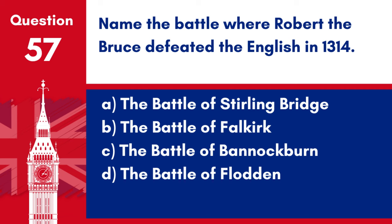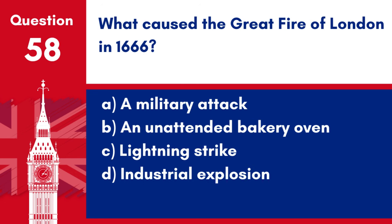Question 57. Name the battle where Robert the Bruce defeated the English in 1314. a. The Battle of Stirling Bridge. b. The Battle of Falkirk. c. The Battle of Bannockburn. d. The Battle of Flodden. Answer: c. The Battle of Bannockburn. The Battle of Bannockburn in 1314 was a significant Scottish victory over the English, led by Robert the Bruce.